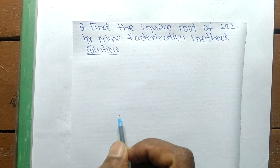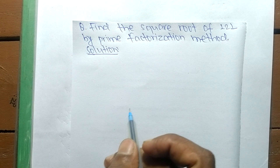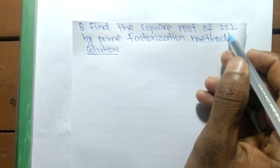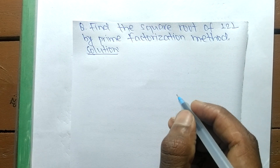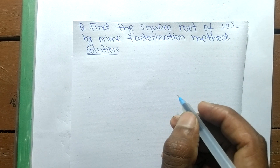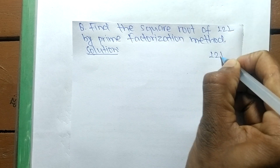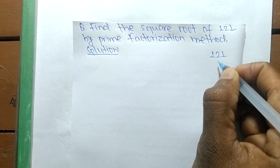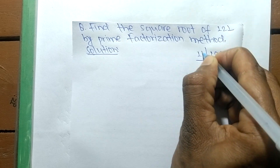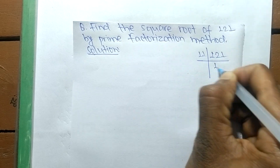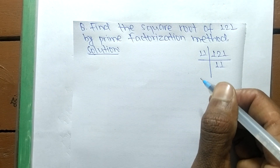Today we shall learn to find the square root of 121 by the prime factorization method. First, we find the prime factors of 121, which is 11 times 11.